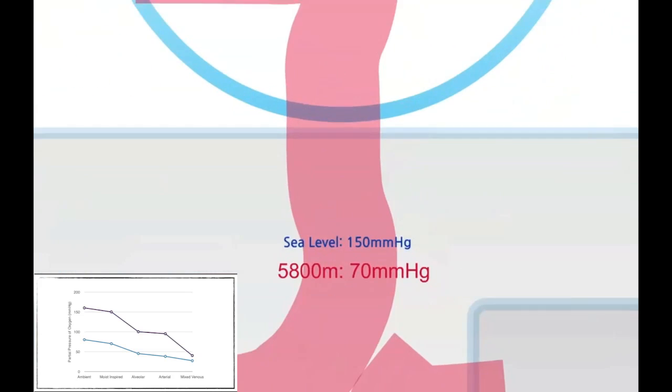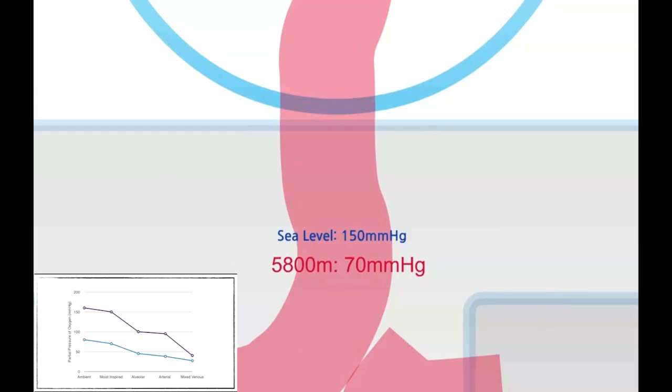As the air is inhaled through the upper respiratory system, it is heated and humidified. The drop seen in partial pressure of oxygen from the ambient air to the inspired air is due to the addition of water vapour to the inspired air. The water vapour pressure at body temperature is 47 millimetres of mercury, and this displaces almost 10 millimetres of mercury of the partial pressure of oxygen. This is an unavoidable loss, and therefore is also 10 millimetres of mercury at altitude.